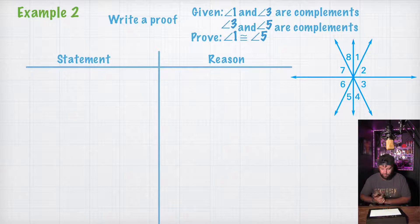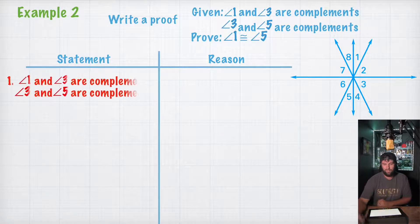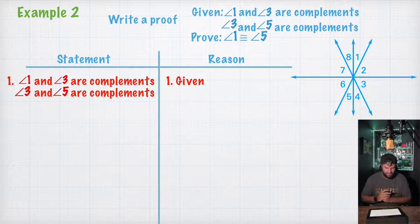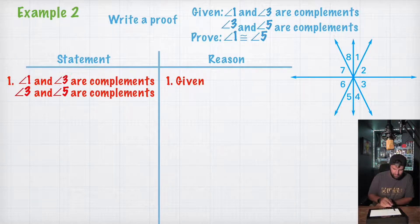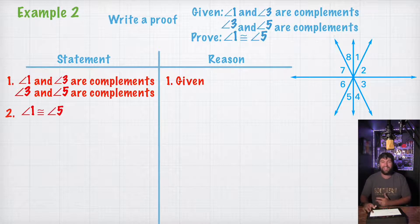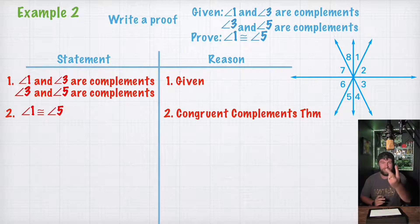So they want us to write a proof where we're given angle 1 and angle 3 are complements, and angle 3 and angle 5 are complements. They want us to prove that angle 1 is congruent to angle 5. Let's just go ahead and write our givens. Now, we just learned that if two angles are complements of the same angle — angle 1 is a complement of angle 3, and angle 5 is a complement of angle 3 — we can actually say that angle 1 is congruent to angle 5 by the congruent complements theorem. That was really simple — a two-step proof!